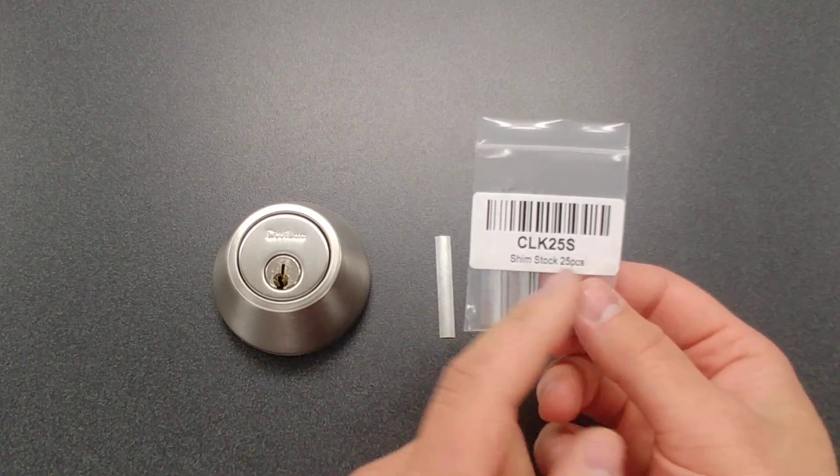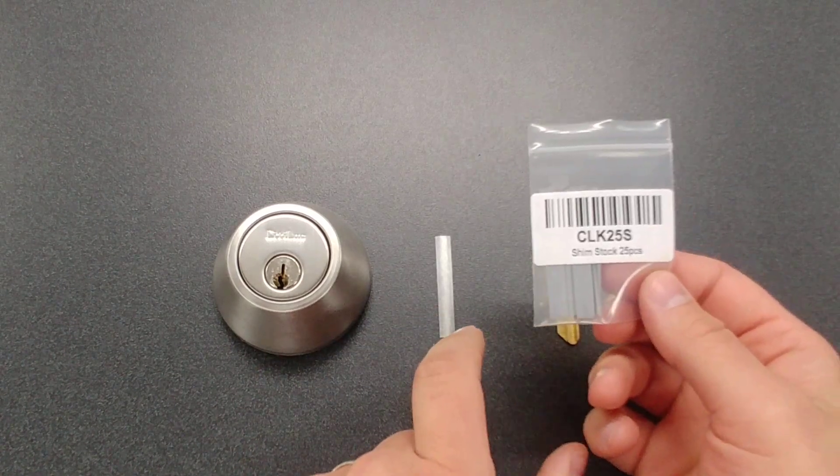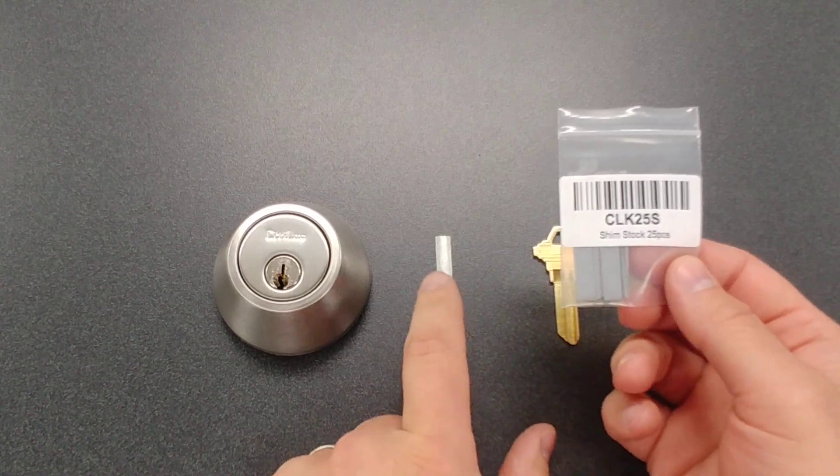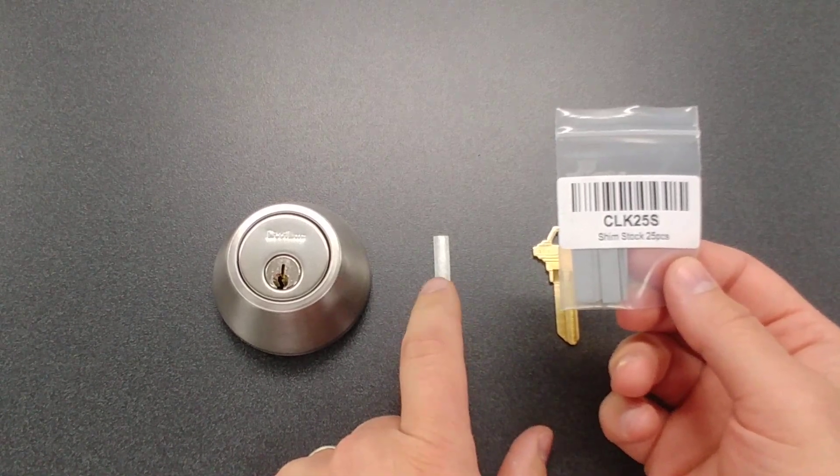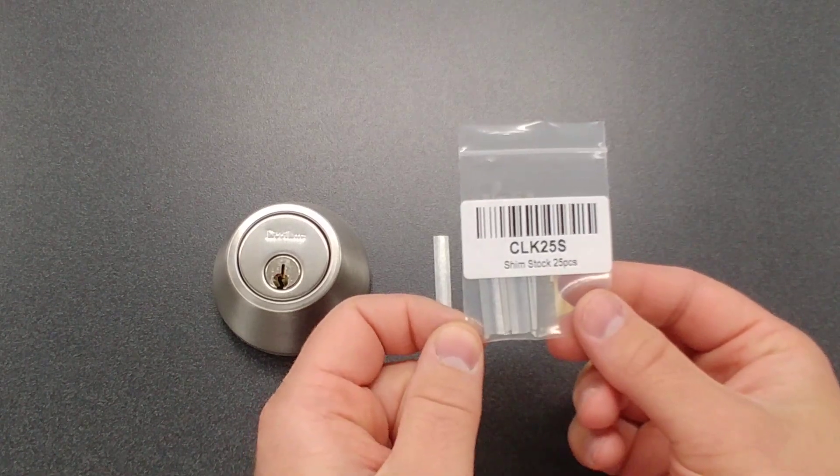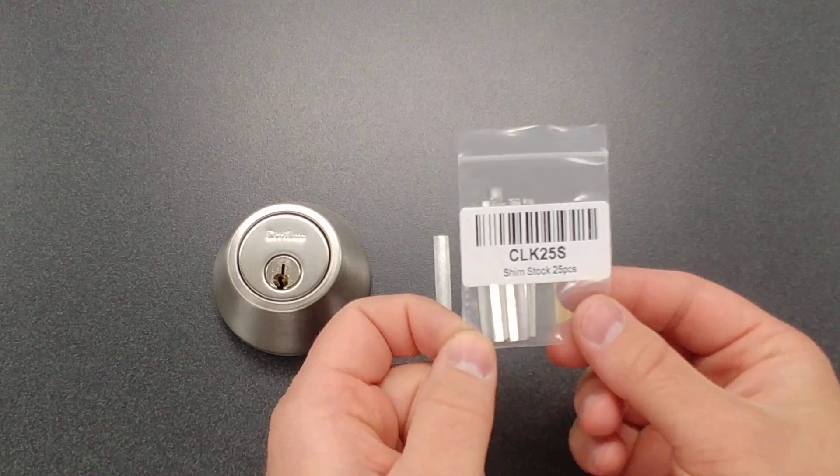It comes with 25 pieces, but that doesn't mean you're only going to be able to shim 25 locks. Each piece of shim, you'll be able to shim several locks. I would guess this pack of 25 pieces, you'll be able to shim two, three hundred locks, no problem.